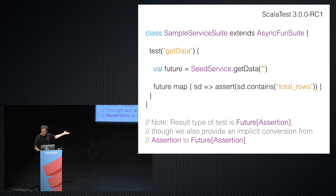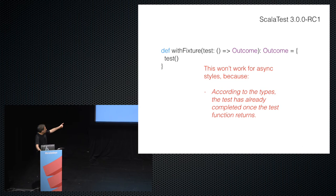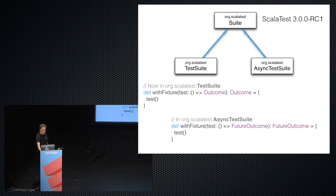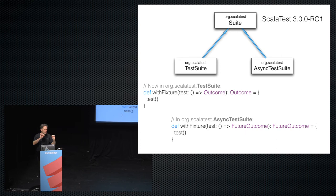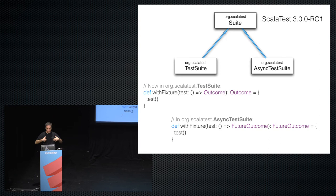But this doesn't work with withFixture, right? The type signature says the thing is finished — you already have to have an Outcome. So two subclasses were created: TestSuite and AsyncTestSuite. withFixture was moved down to that level — TestSuite has the old withFixture returning Outcome, and AsyncTestSuite has a new withFixture where the type is FutureOutcome. FutureOutcome wraps Future[Outcome] with a nicer API. When you extend FunSuite or FunSpec, it extends TestSuite, so all old code works. AsyncTestSuite is new and has a different withFixture signature that makes sense for async.